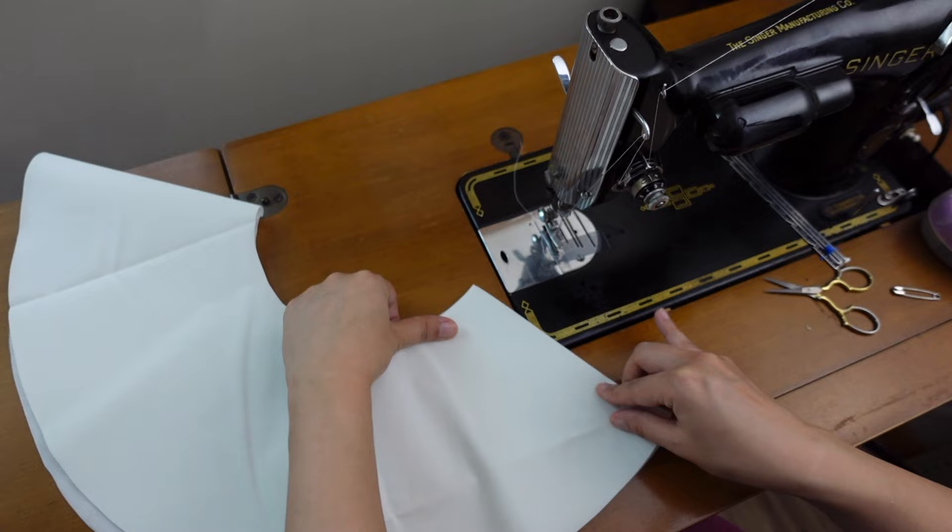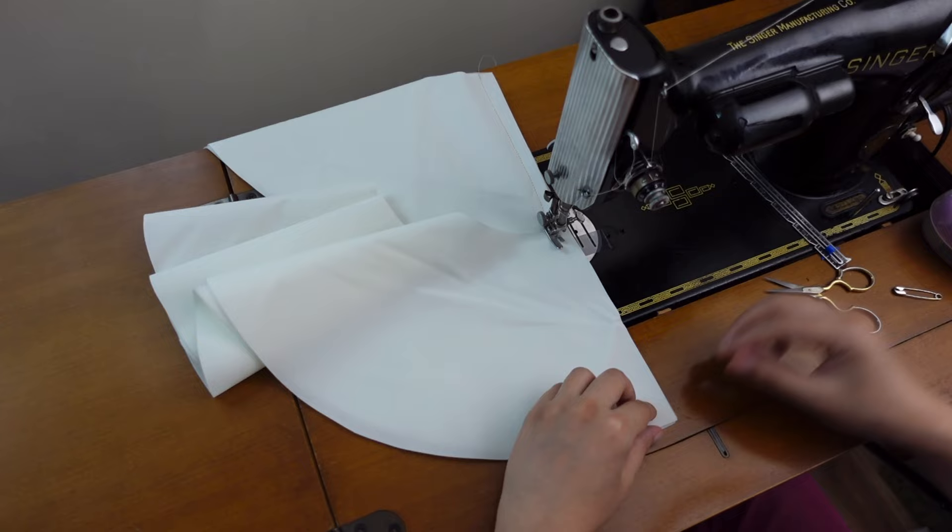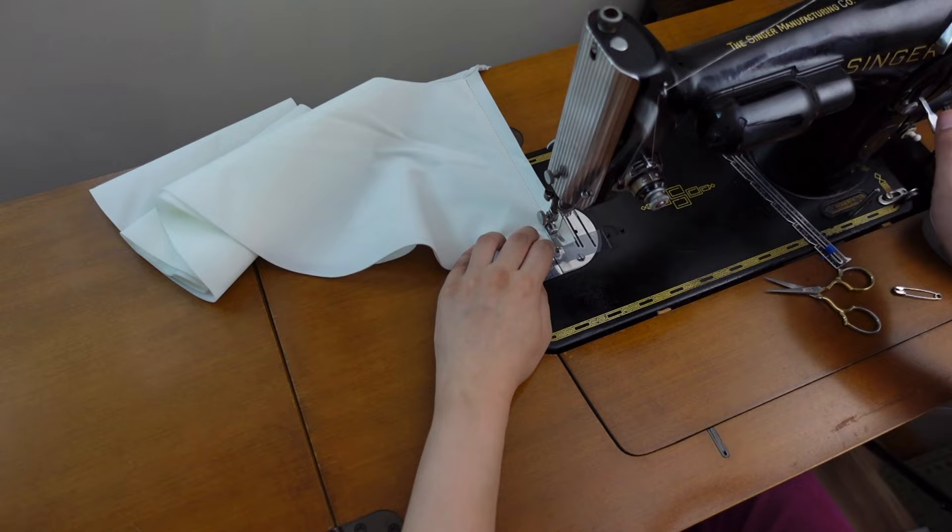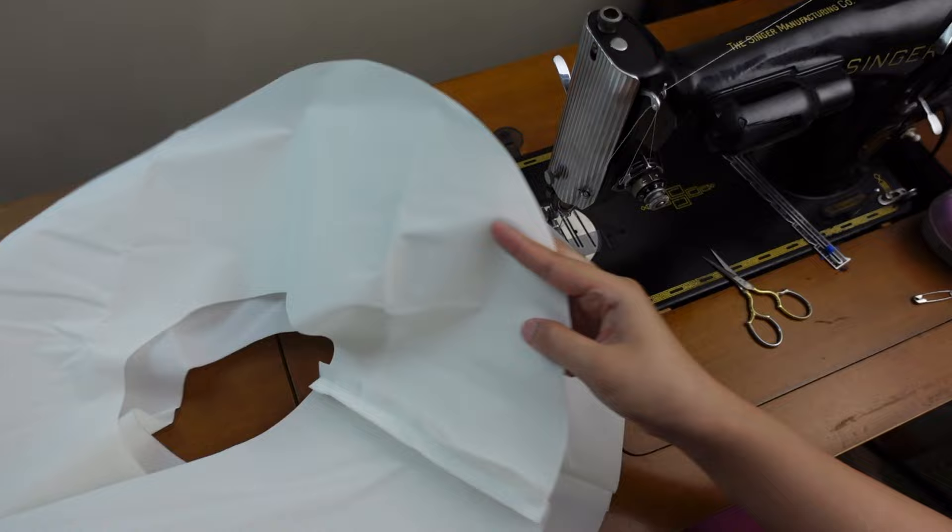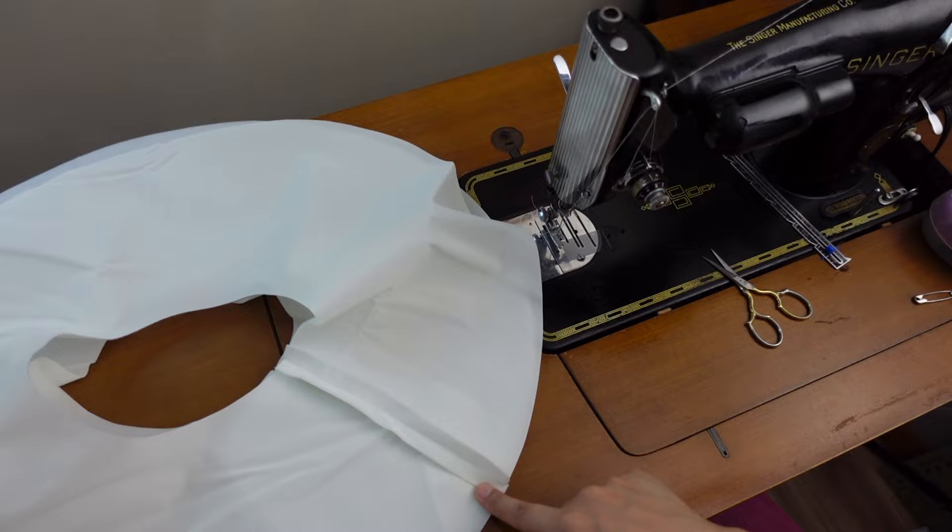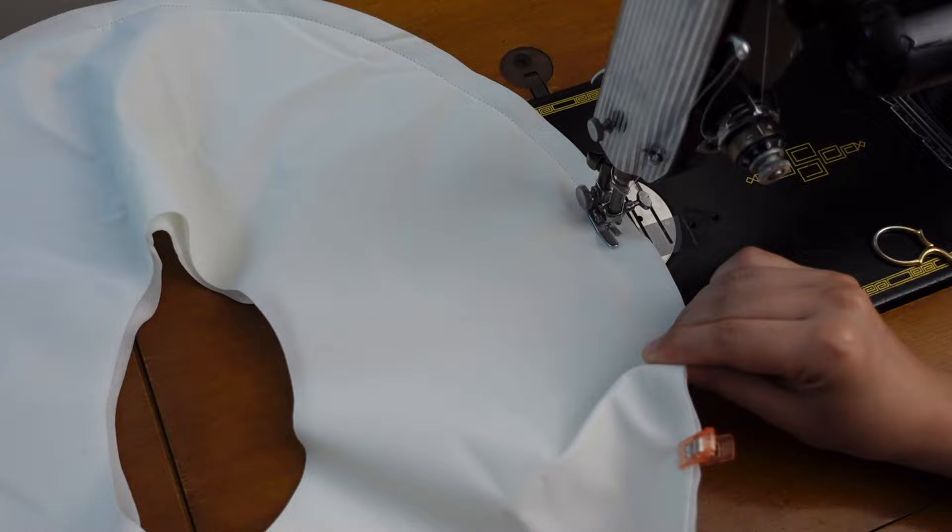Sew the center back seams of the brim pieces. Then sew both pieces together with right sides facing each other. When you're sewing a long seam like this, two layers tend to shift. To prevent shifting, I clip or pin in a couple places.